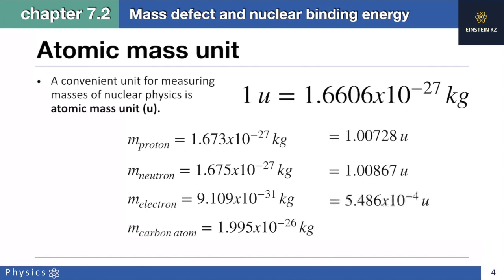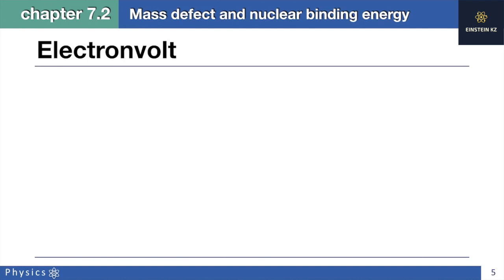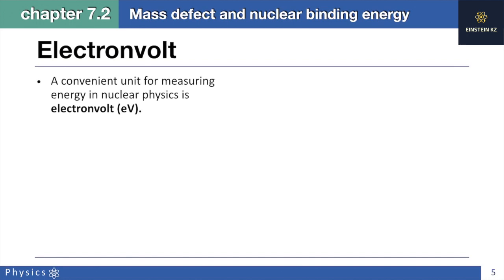The mass of the electron and the mass of the carbon atom in atomic mass units will be 12 atomic mass units. As well as atomic mass unit, there is a convenient way for measuring energy in nuclear physics which is called electron volts. One electron volt is equal to 1.6 times 10 to the power of minus 19 joules.